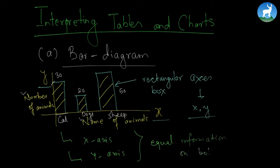So this bar represents the 50 pigs. This is what we call the bar diagram. We have the x-axis and y-axis and information is equally presented on both axes.